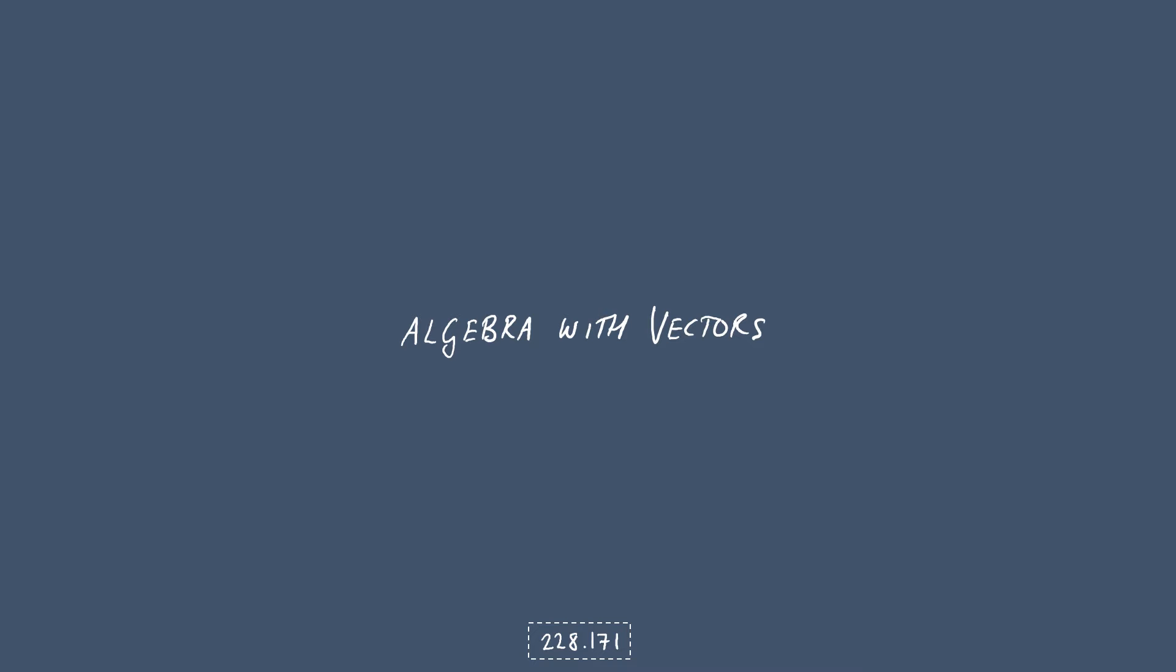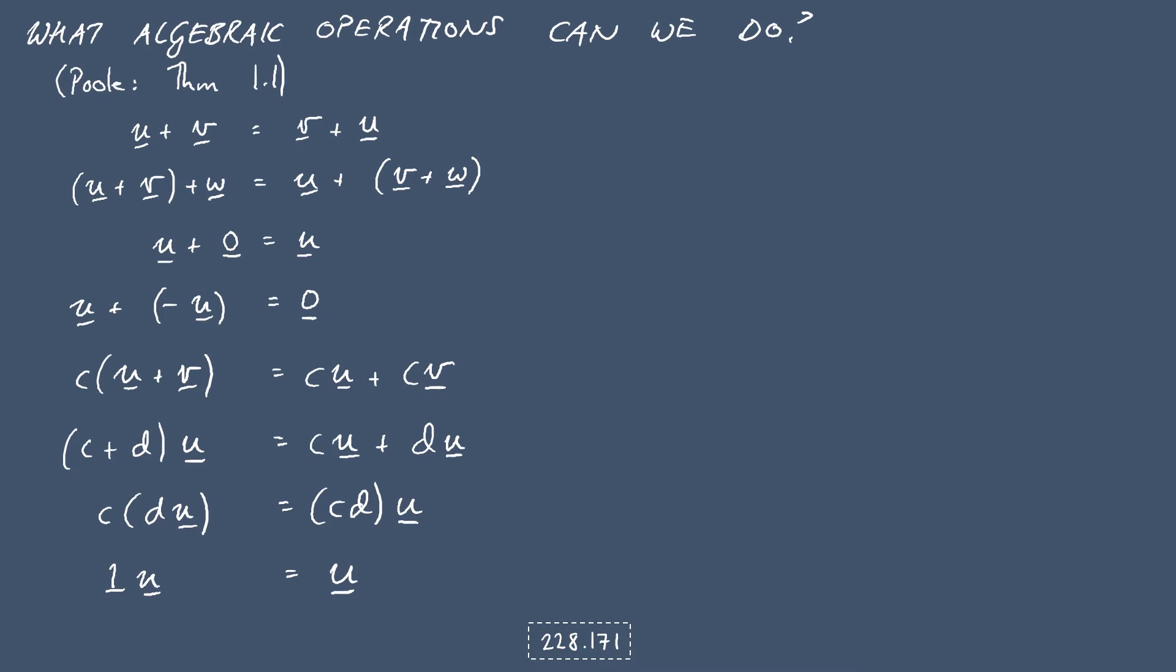And once we've done that, we can then be confident that what we're doing is actually going to work. Okay, so first we're going to look at just our vector addition and scalar multiplication. And essentially what we've got here is a list of operations and how they work with vectors instead of with numbers.